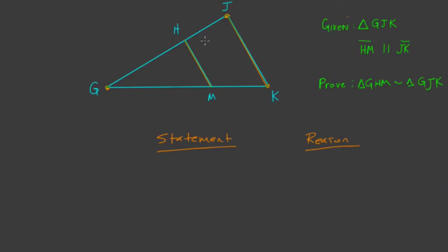So we've got a triangle with two parallel lines. We want to prove that triangle G, H, M is similar to G, J, K. So again, I go through this for myself. G, H, M is here. We're proving that this smaller triangle is similar to this larger triangle, G, J, K.